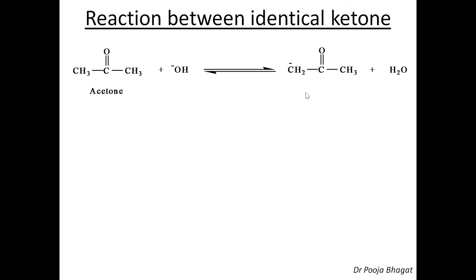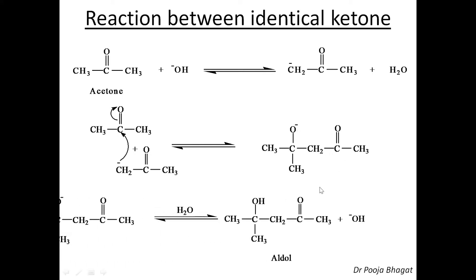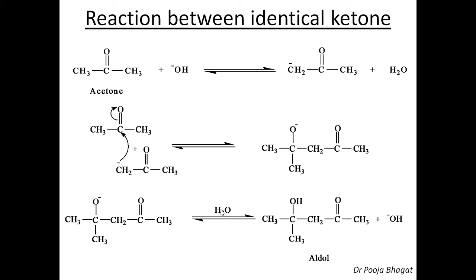The base abstracts either hydrogen to give CH₂⁻COCH₃. This carbanion or enolate ion is generated, and now this ion attacks on the carbonyl part of another acetone molecule. The negative charge attacks on the carbon and the double bond shifts towards the oxygen, giving CH₃C with two methyl groups, single bond O⁻, then CH₂COCH₃. This O⁻ then extracts a proton from the water molecule and you get OH. So you get the aldol product — aldol is a general term.